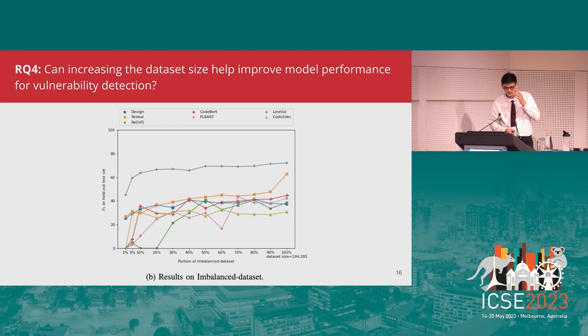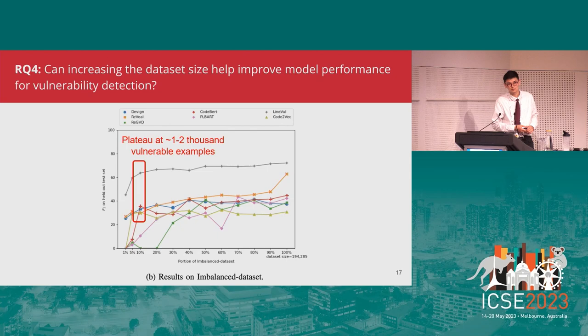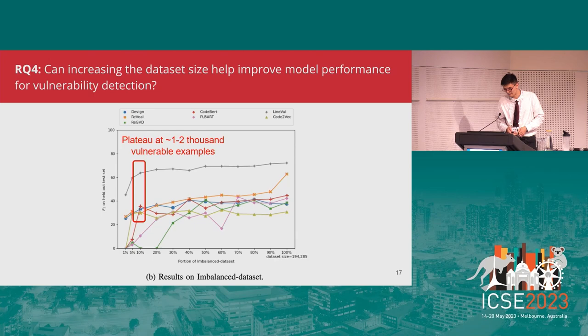For the next research question, we asked: can increasing the dataset size help improve model performance for vulnerability detection? We trained models with datasets of decreasing size, using the entire dataset at 100% on the far right. We found that performance increased with more data, but most models reached near peak performance with only around 1,000 to 2,000 vulnerable examples. Beyond this turning point, performance did not significantly increase with more data.